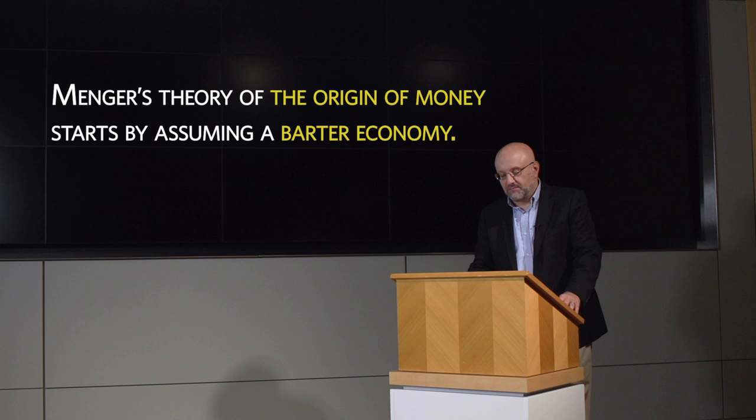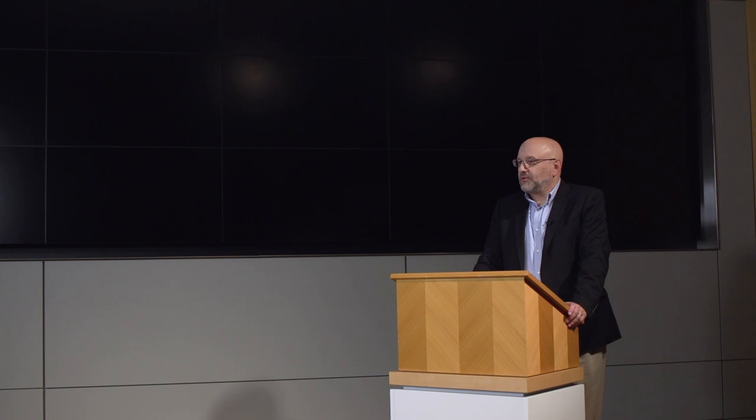Menger's theory begins by assuming people are engaging in barter exchange. The problem with barter, of course, is finding someone who wants what you have and has what you want. This is the problem of the double coincidence of wants. If I'm interested in obtaining eggs and I grow corn, I have to find someone who not only has eggs they want to sell but who wants to take corn in exchange. This absence of the double coincidence of wants makes it very difficult to exchange and makes it very difficult for economies to grow and prosper.